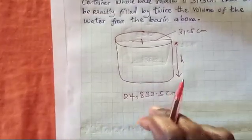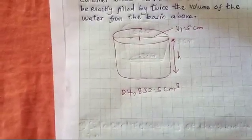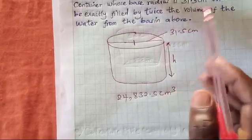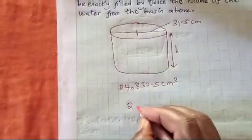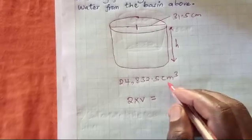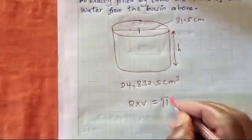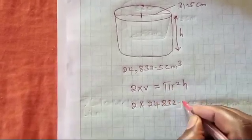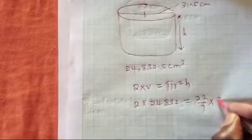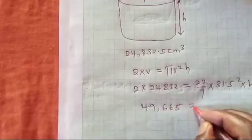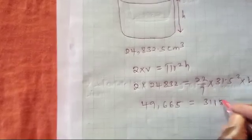The volume times two equals the formula for the volume of a cylinder, which is πR²H. So: 2 × 24,832.5 = (22/7) × 31.5² × H. This gives 49,665 = 3,118.5H, and we solve for H.